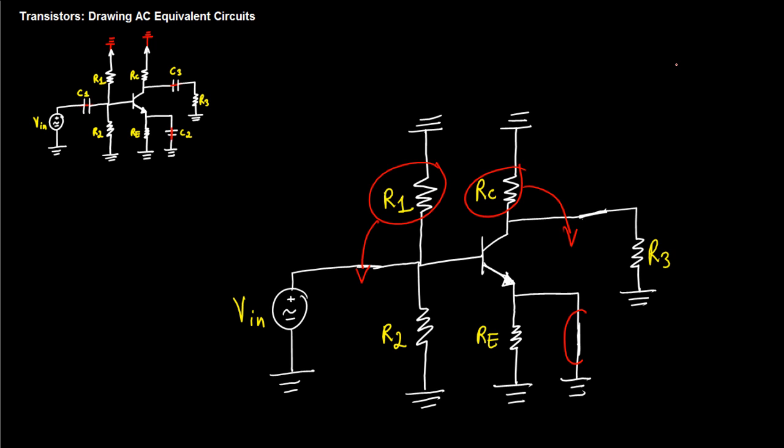notice that I have a short circuit to ground here. So all of my current when it comes out of the emitter, instead of going through RE, all of it is going to go through here. So it's like RE is not even there. So for our final circuit we're also going to get rid of RE.